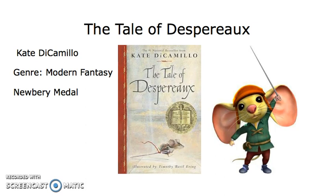Throughout the novel, Despereaux meets the Princess Pea, who is the princess of the palace, and has a conversation with her and falls in love with her. This disturbs the other mice in the community, and Despereaux is put on trial. Later on, he's sent to the dungeon.